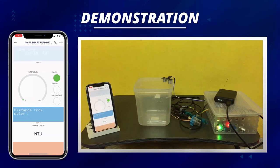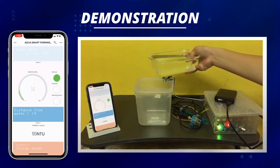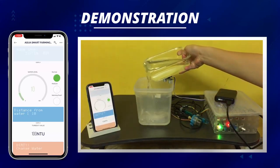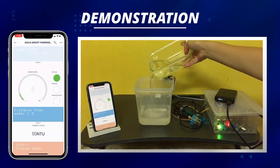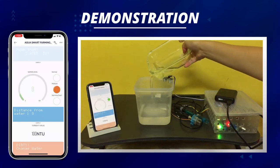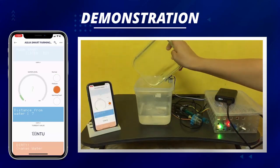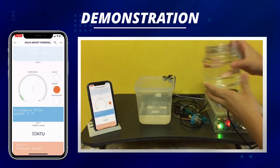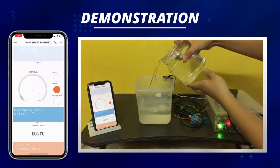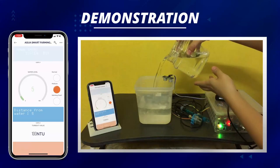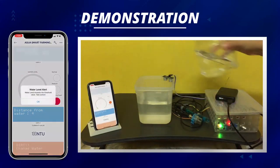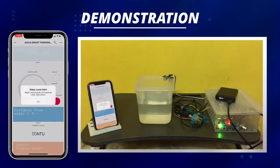The water level is normal if the distance is more than or equal to 5. There are three different virtual LED sets in the Blink app. The red LED signals that the water will overflow and the buzzer is switched to high mode. Green represents a normal water level, while yellow denotes a water level in the middle range.